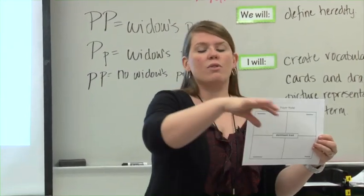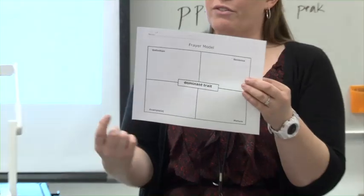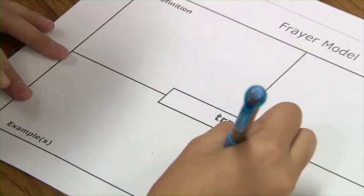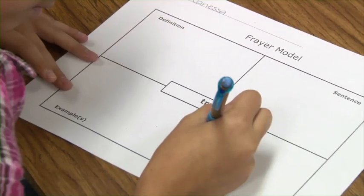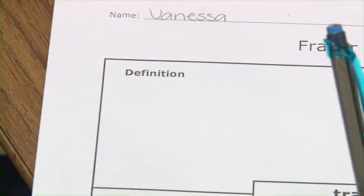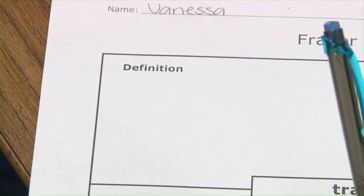It's set up as four squares. You can place the vocabulary term or important concept in the center. And then they have four things that they have to do with that word. Typically one of them is to provide a definition, which can be given by the teacher or sought out in a book.